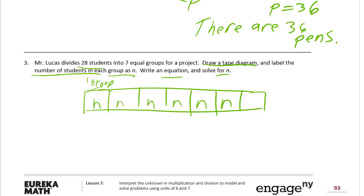And we know that the total number of students is 28. So 28 divided by 7 groups equals n. So that's our equation, and now we're going to solve for n.